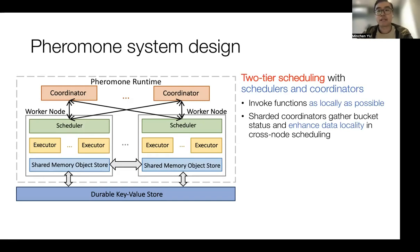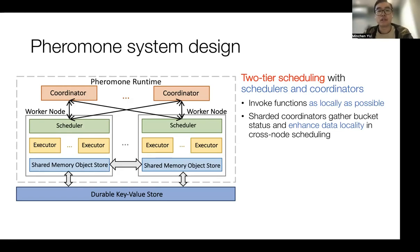To ensure low invocation latency, Pheromony adopts a two-tier scheduling. Both local schedulers and coordinators can track the bucket status and make invocation decisions. By running scheduling at each worker node, we can invoke functions as locally as possible. For a large workflow running across multiple workers, the coordinator gathers the bucket status and schedules requests of downstream functions to workers with the most data objects, in order to enhance data locality. The coordinators are sharded to ensure high scalability.